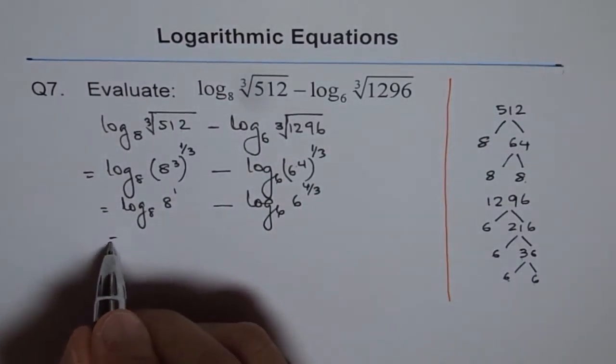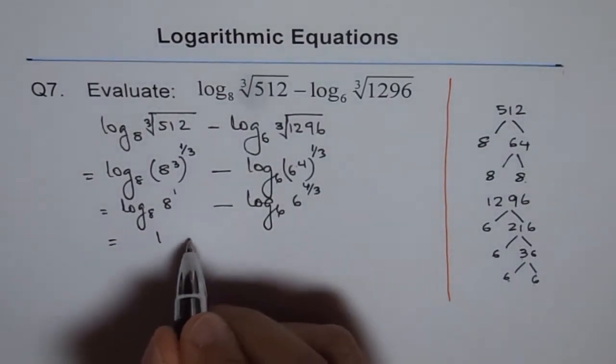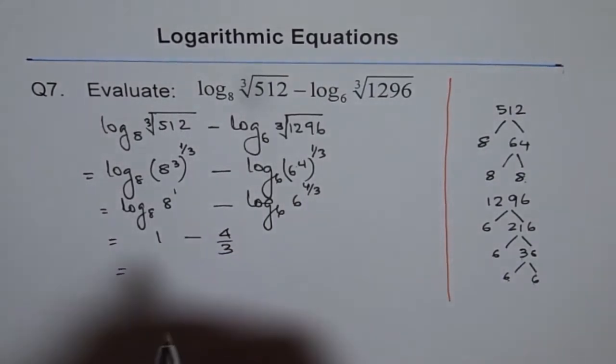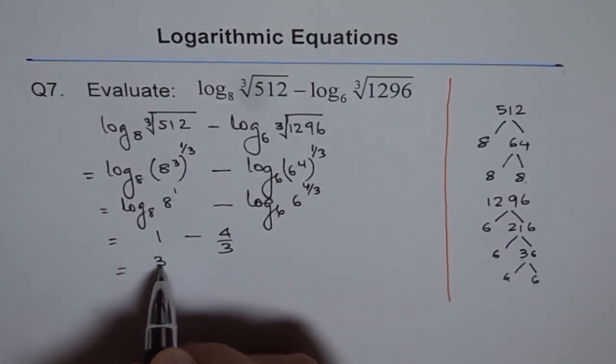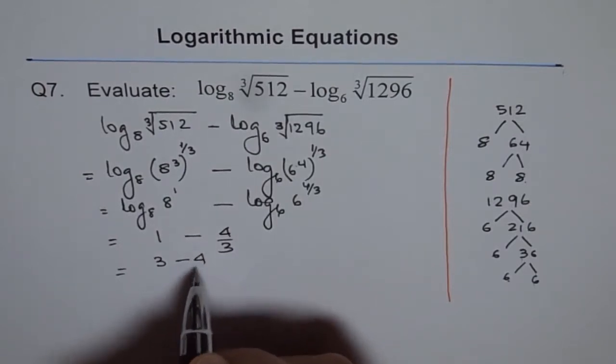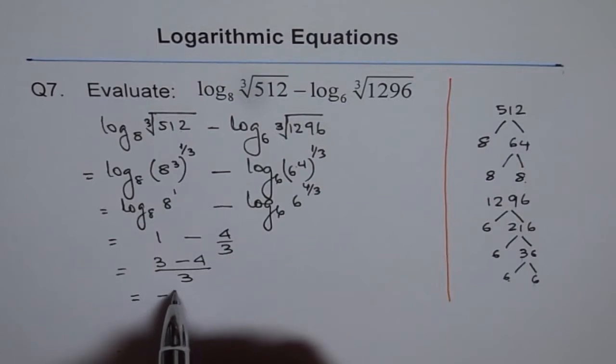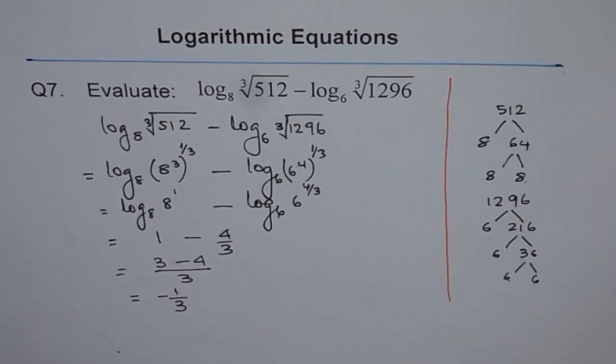Now I can write this as 1 minus 4/3, and that gives me the result. This is 3 minus 4 over 3, which equals minus 1/3. So that is my answer, minus 1/3 for this particular expression.